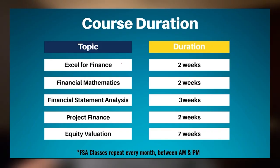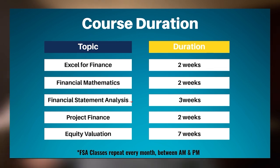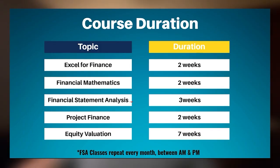This is where a lot of people get confused, so pay attention to how this program runs. Excel will run for about two weeks. Financial mathematics will run for about two to three weeks. Financial statement analysis, being one of the most important modules, gets repeated every month — so even if you miss a class it's no problem. The flow is that you can start from Excel, financial mathematics, or financial statement analysis, but without knowing these three you cannot get into project finance or equity valuation.